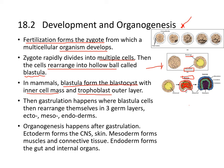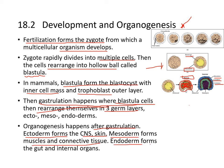Gastrulation occurs next, where blastula cells rearrange into three germ layers: ectoderm on the outside, mesoderm in the middle, and endoderm on the inside. After gastrulation, organogenesis occurs — the ectoderm forms the CNS and skin, mesoderm forms muscles and connective tissues, and endoderm forms the gut and internal organs.